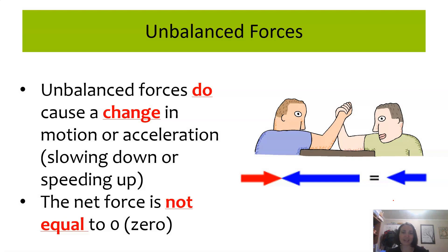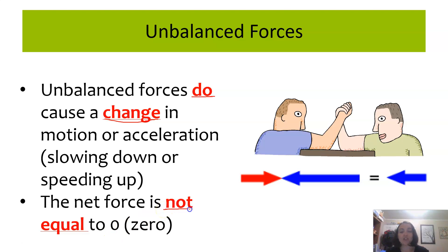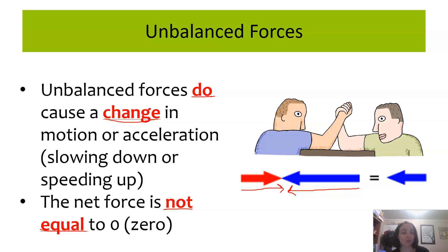Unbalanced forces, on the other hand, are when we do get a change in motion or acceleration. The object might slow down or speed up — it will accelerate. The net force in these examples is not equal to zero. One player is pushing with a smaller magnitude force, so the player with the larger magnitude force is going to start to win and push the other player down.